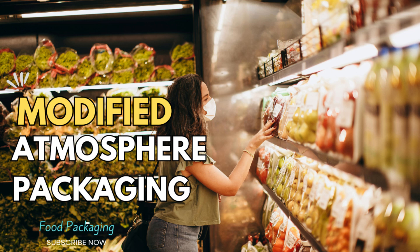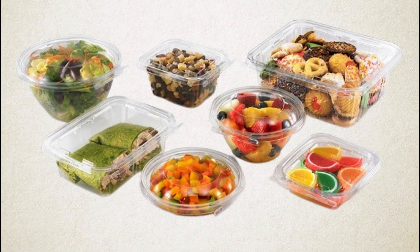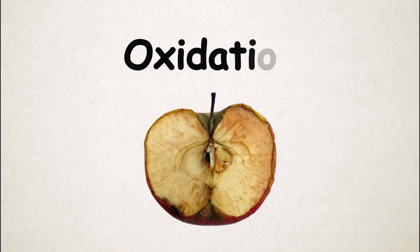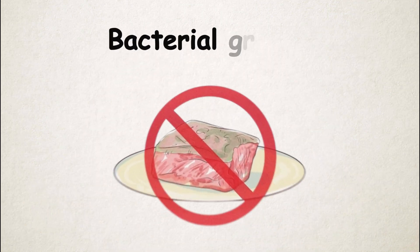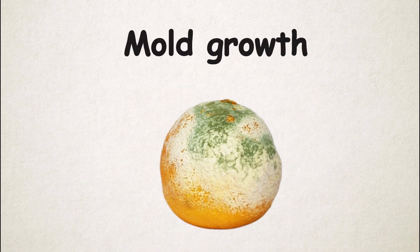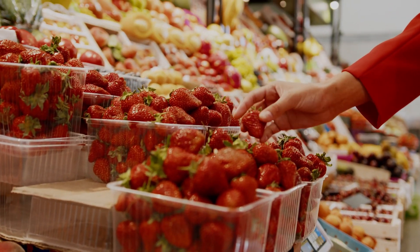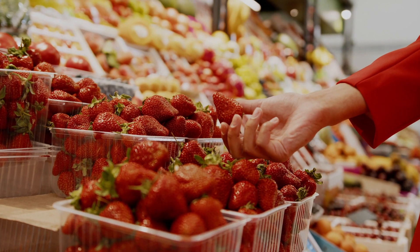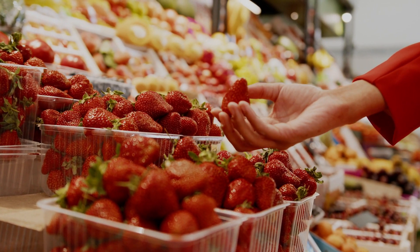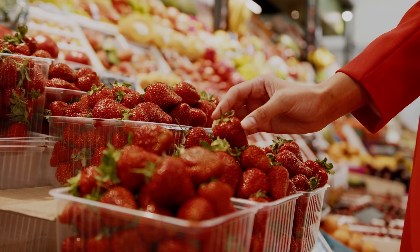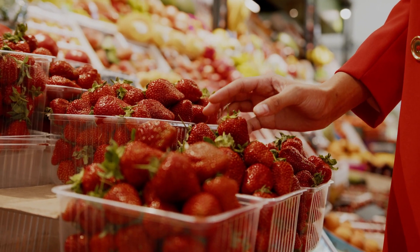Hello everyone, welcome back to my YouTube channel Sqlanta Science. When packed in air, food is susceptible to three main spoilage mechanisms: simple oxidation, bacterial growth, and mold growth. However, all of these can be suppressed or reduced by packaging the food in the appropriate modified atmosphere.